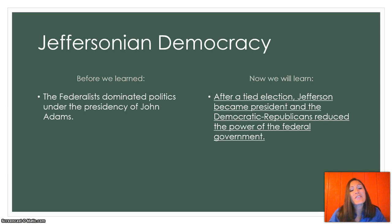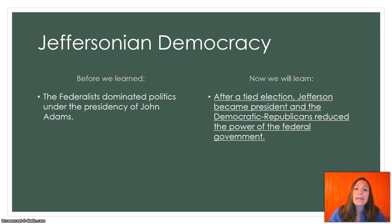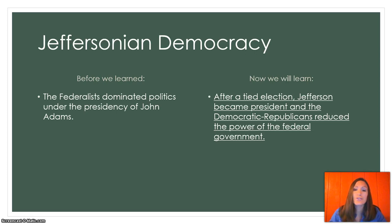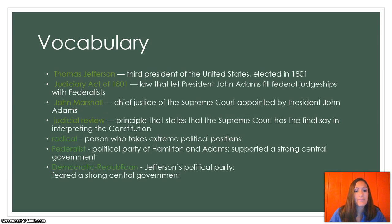So before we learn, the Federalists dominated politics under the presidency of John Adams, and today our focus is on Jefferson. We are going to learn that after a tied election, Jefferson became president and the Democratic Republicans reduced the power of the federal government. Here is the vocabulary, so you can pause the video and write down these vocab terms.